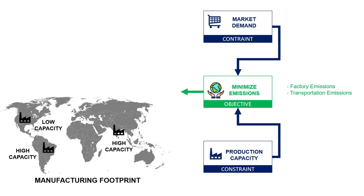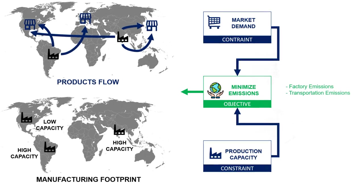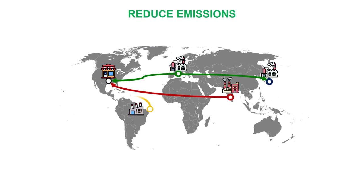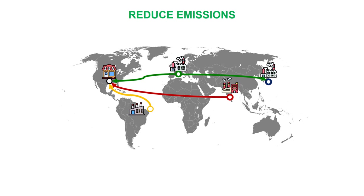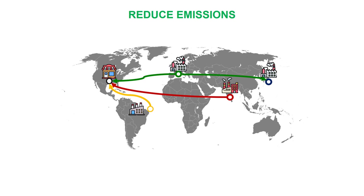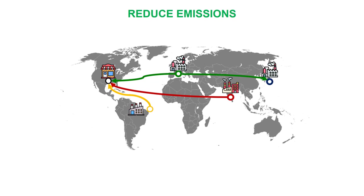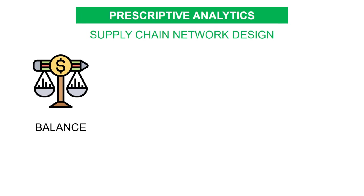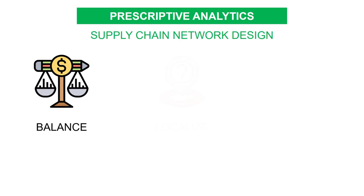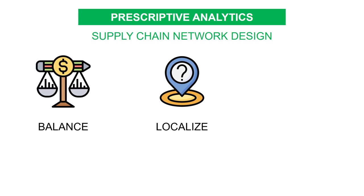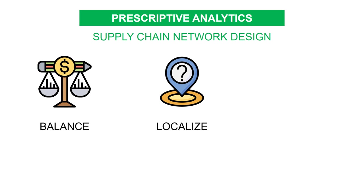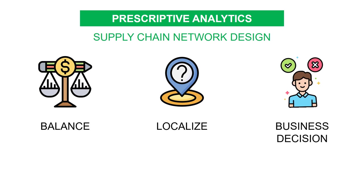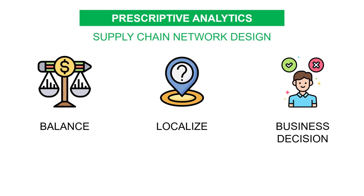The model output is completely different: the production footprint changes significantly, with localization of production — some markets produce locally to reduce the transportation footprint. Of course, there will be an impact on the total cost of production and delivery. It is a matter of balance between sustainability and profitability, and it is usually driven towards regional localization of production. You can use the model outputs to support the business decision-making process.